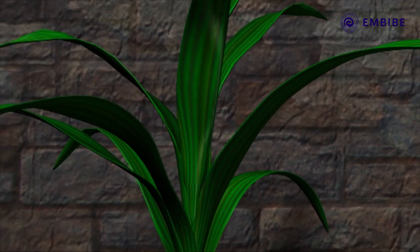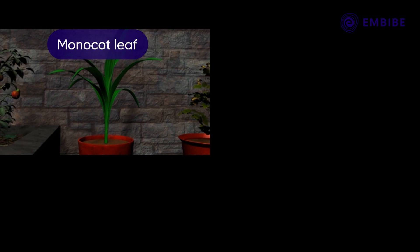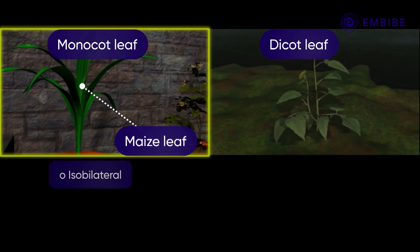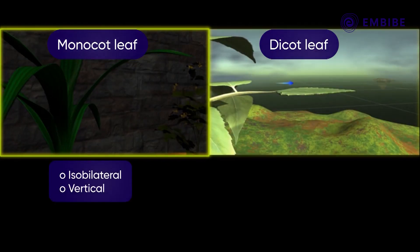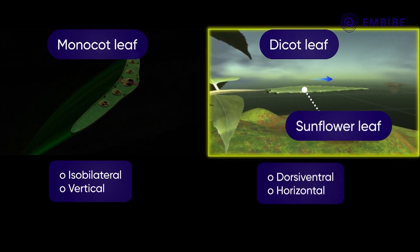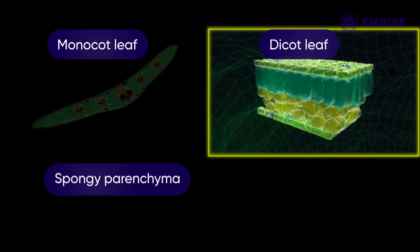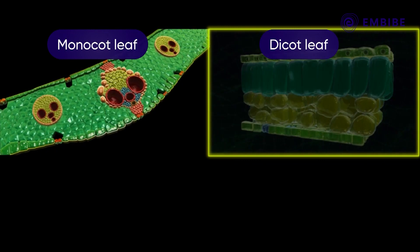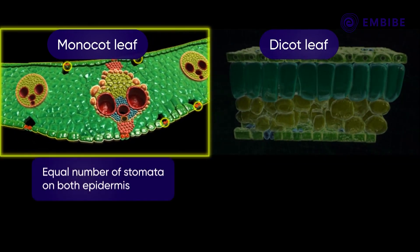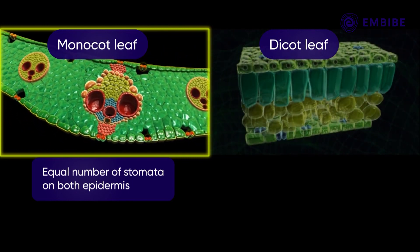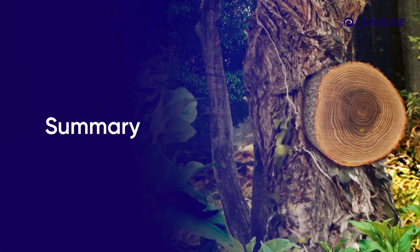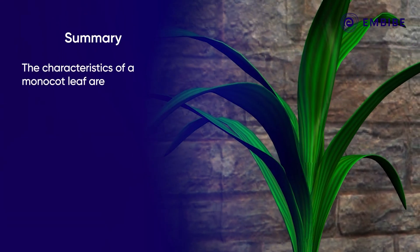The characteristics of a maize leaf (a monocot leaf) as compared to a dicot leaf are: the leaf of maize is isobilateral, that is vertical, while the leaf of a dicot is dorsiventral, that is horizontal. In monocots, the mesophyll has a uniform spongy parenchyma, while in dicots the mesophyll has palisade and spongy parenchyma. The sectional view of the monocot leaf shows an equal number of stomata on both the epidermis, while the dicot leaf section shows a greater number of stomata on the lower epidermis.